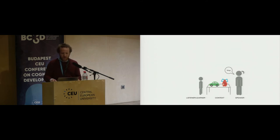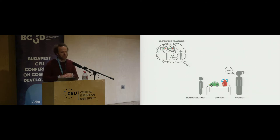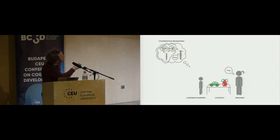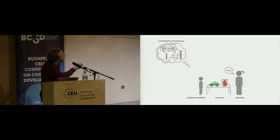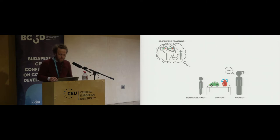Another source of information involves assumptions about how the speaker chooses their utterances. By assuming the speaker is trying to be informative — the Gricean notion of cooperative communication — the child can also reason about what they could mean. The child may reason: 'They used the word wug, which I don't know. If they wanted to communicate about the car, and they know the word car and are informative, they should have said car. Since they didn't, they probably mean the other object.'